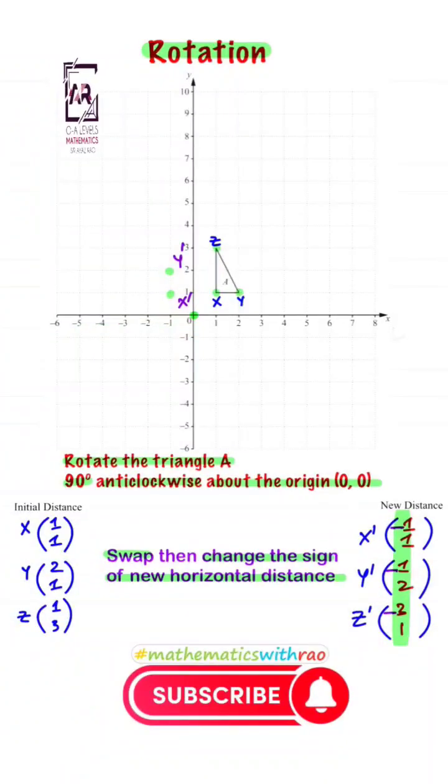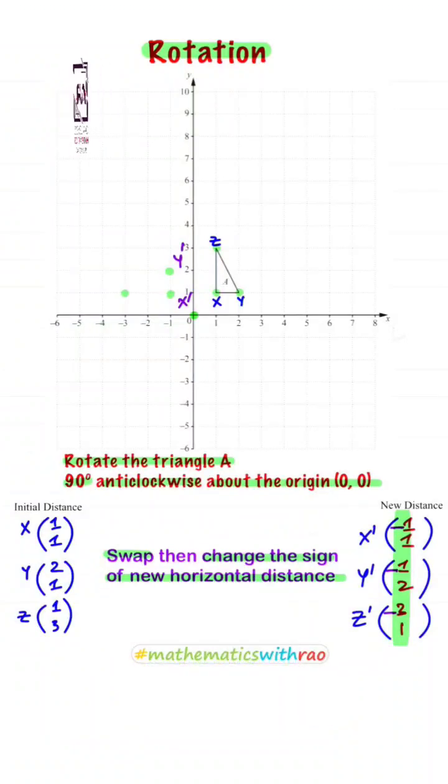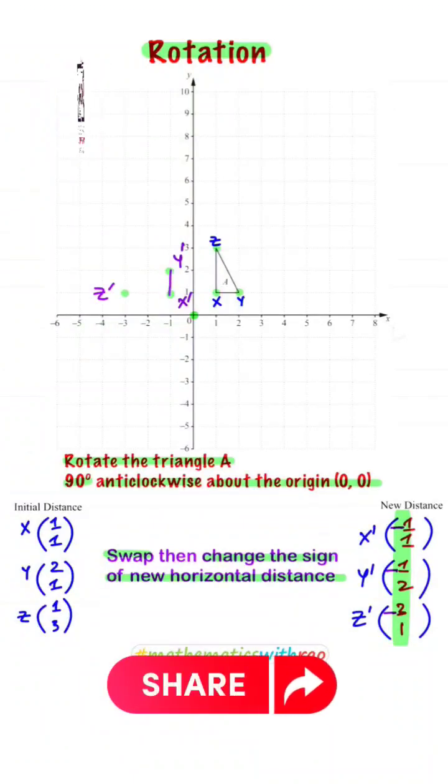Triangle is rotated 90 degrees anti-clockwise about the origin zero comma zero.